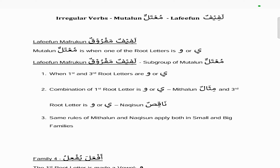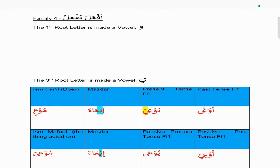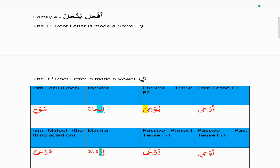This is a combination of Mithalon, which is when the first root letter is waw or ya, and Nakisun, where the third root letter is waw or ya. So the same rules of Mithalon and Nakisun apply both in small and big families.